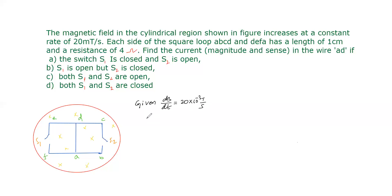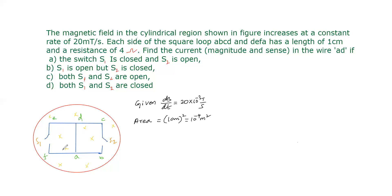The area of loop ABCDA or loop ADEFA — since it is a square with side one centimeter — is length times breadth, which equals one centimeter × one centimeter, equal to 10⁻⁴ meter squared. The resistance of each side is 4 ohm.